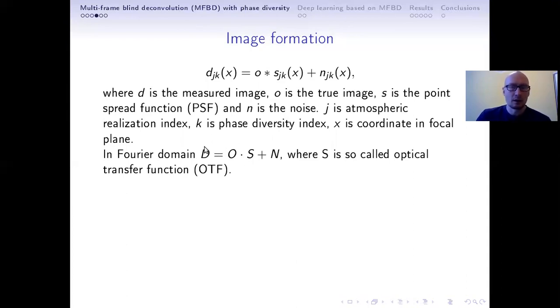Instead of convolution, we have just a multiplication now. And this capital S is now called the optical transfer function.